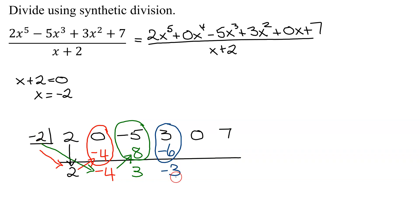Negative 2 times negative 3 is positive 6. Write it up here. Add 0 and 6, you get 6.